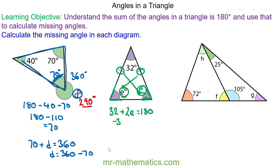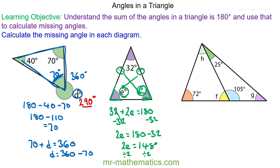So we can take away 32 from both sides. 2E will equal 180 take away 32, so 2E will equal 148 degrees. So we can divide both sides by 2 now to work out the value of E. So angle E is 148 divided by 2, which is 74 degrees.